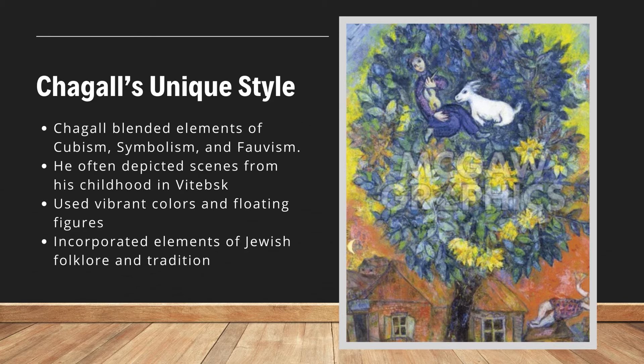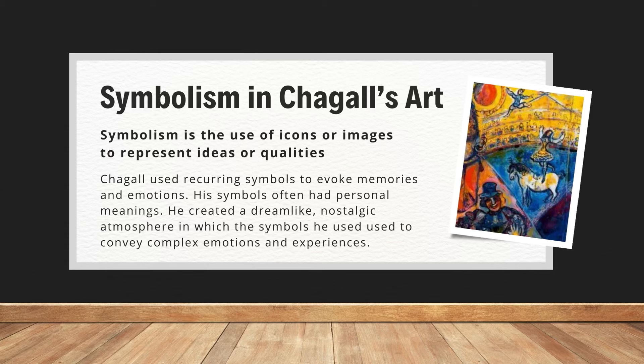He used vibrant colors and floating figures — we'll take a look at those later when we look at I and the Village. And he incorporated elements of Jewish folklore and tradition, again pulling from his childhood and upbringing to influence what he put in his artwork.